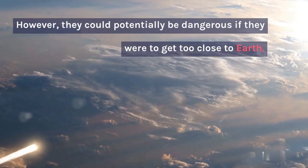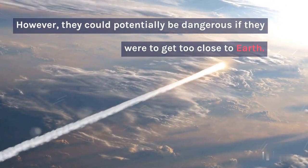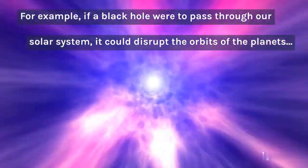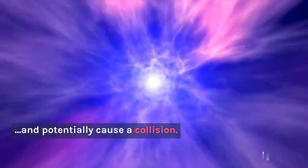However, they could potentially be dangerous if they were to get too close to Earth. For example, if a black hole were to pass through our solar system, it could disrupt the orbits of the planets and potentially cause a collision.